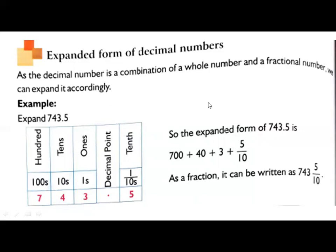743.5. So 743 is the whole number part. So before the decimal point, ones, tens, hundreds. So 3 is in ones place, 4 is in tens place, 7 is in hundreds place. Next, decimal point.